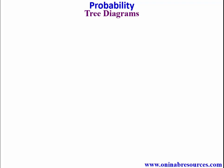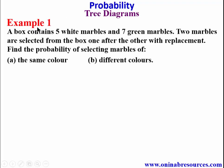So we take our first example, Example 1. A box contains 5 white marbles and 7 green marbles. 2 marbles are selected from the box one after the other with replacement. Find the probability of selecting marbles of: A, the same color; B, different colors. This is an example of independent events.